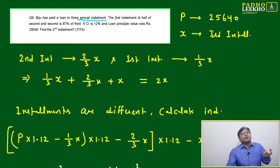Again, the relation is given. The first installment is half of the second, and the second is 67% of the third. If compound interest is 12% and the loan principal value was 25,640, then find the second installment principal amount.